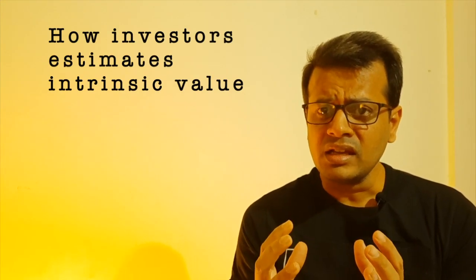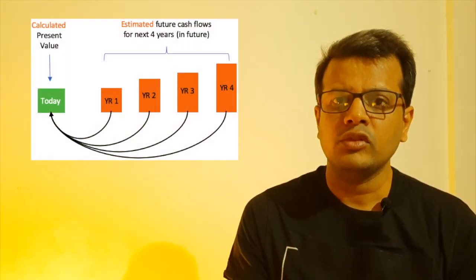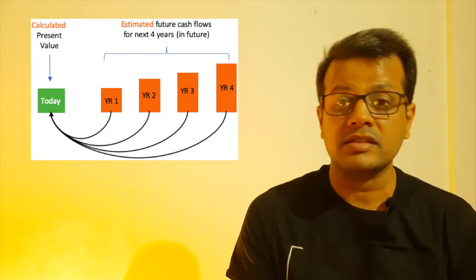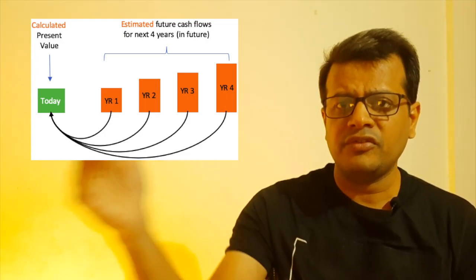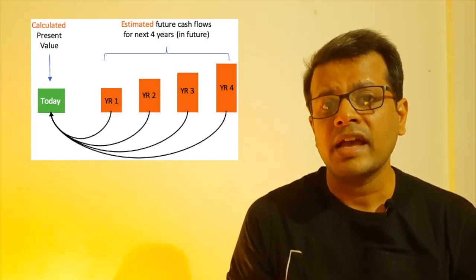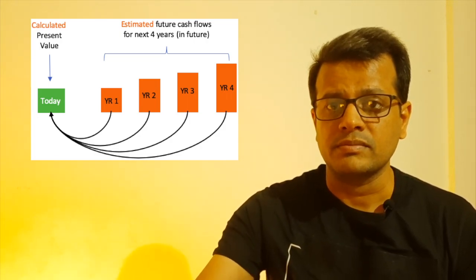Let me give you an example of how an expert value investor estimates the intrinsic value of a stock. Suppose you are buying a fixed deposit from a bank for the next five years. In the first year, the interest the bank deposit will give you is, say, 100 rupees. In the second year, the same 100 rupees. Third year, 100 rupees — till the fifth year, the bank deposit is going to give you interest of 100 rupees each year.